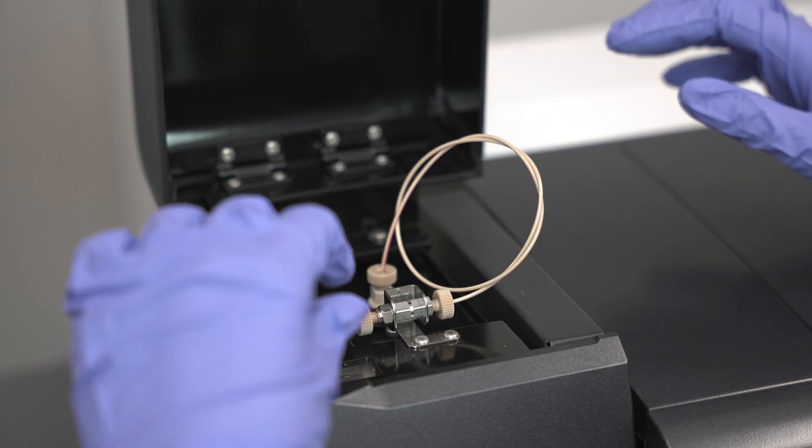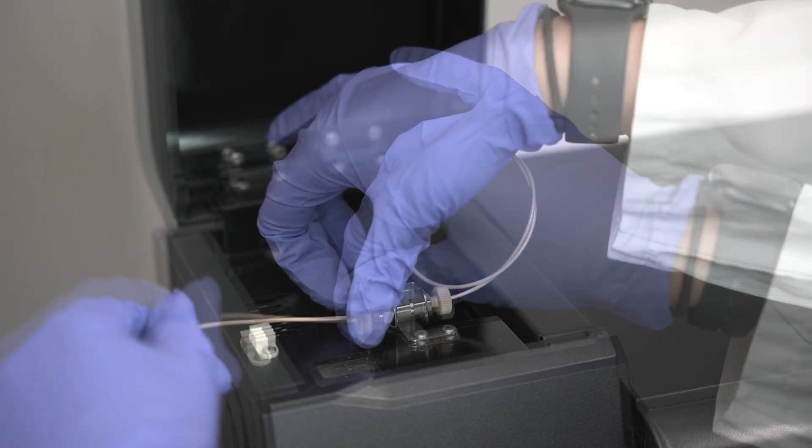First, open the ESI probe cover and remove the peak tubing from the source inlet.